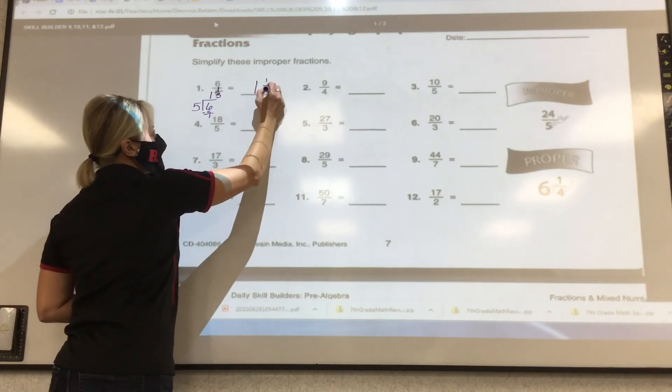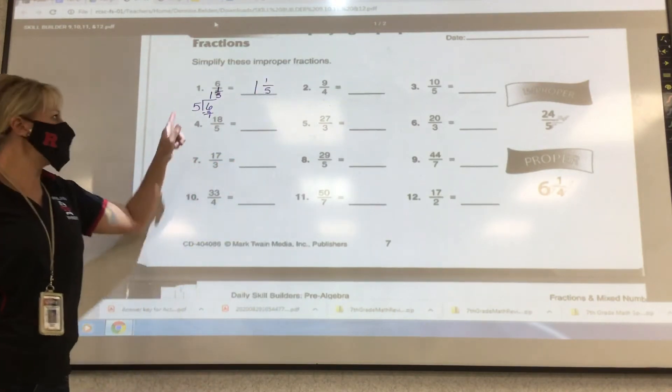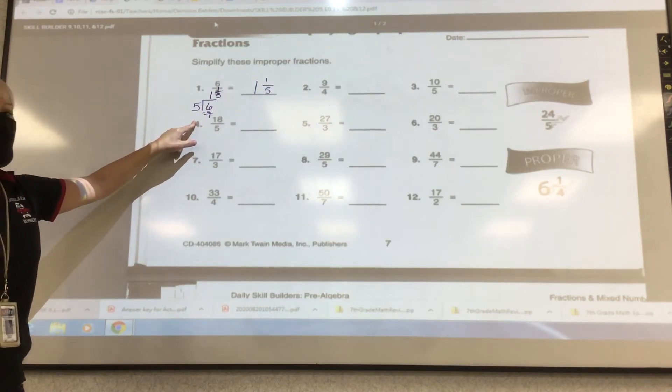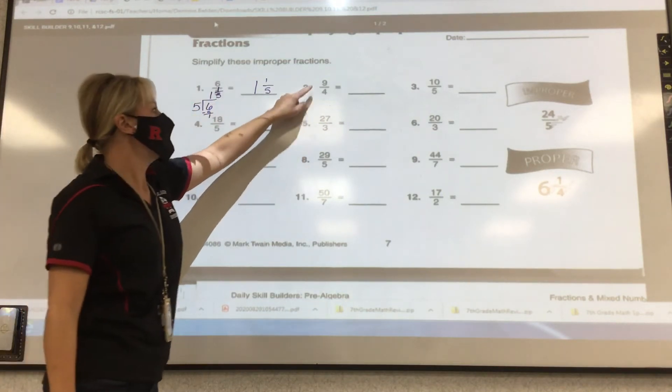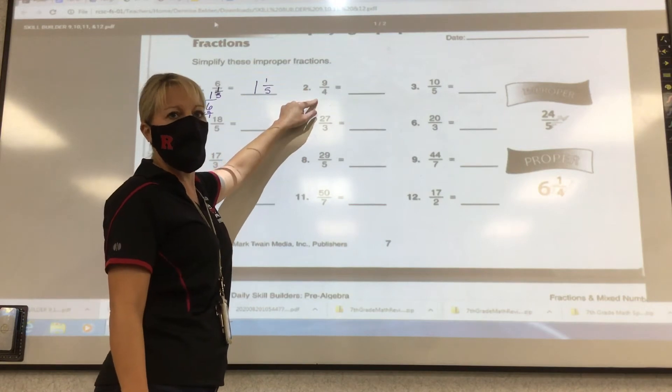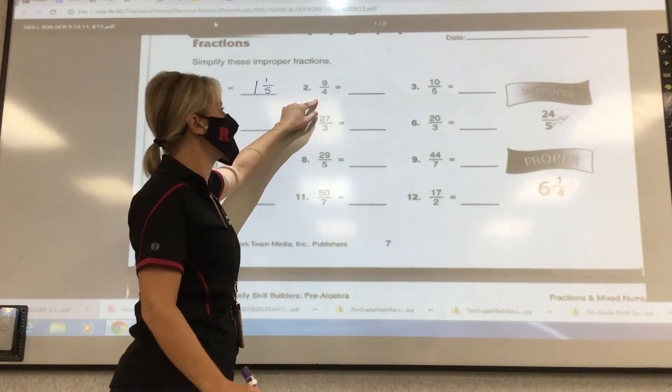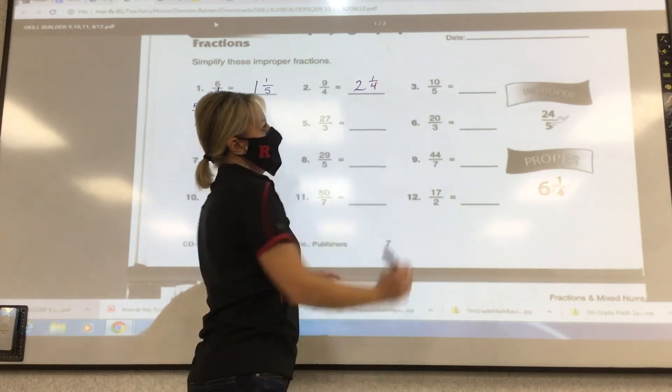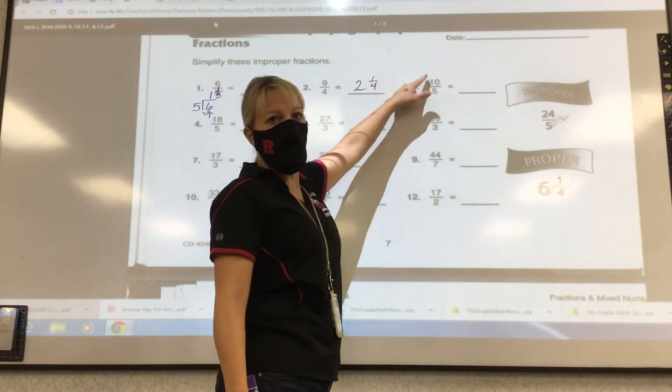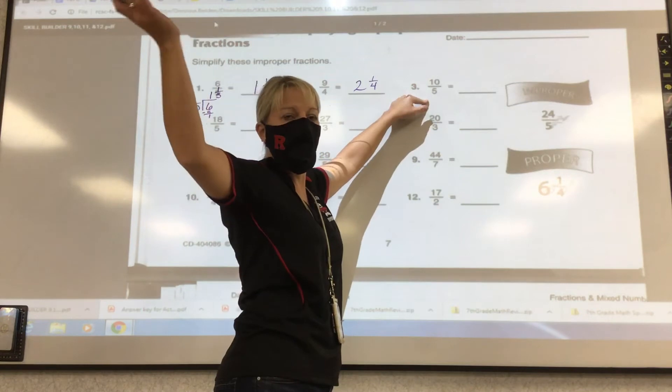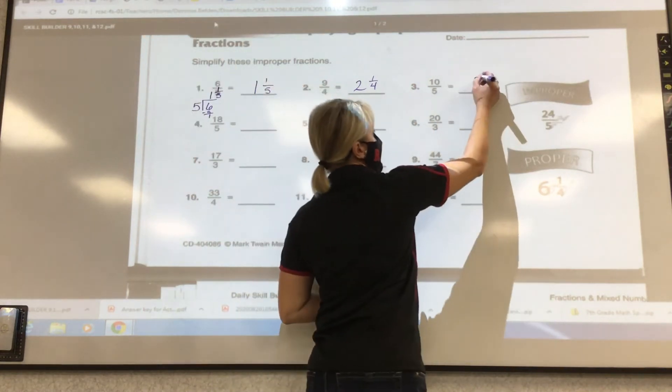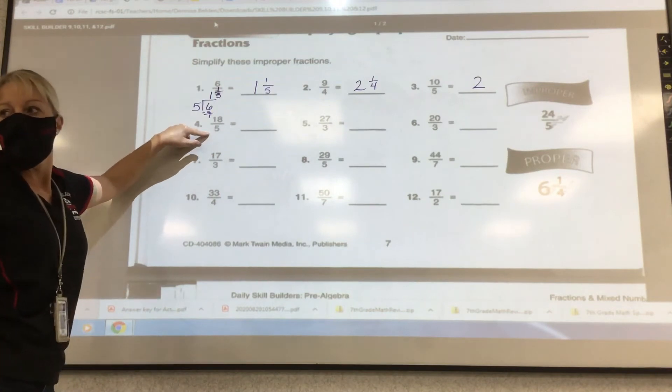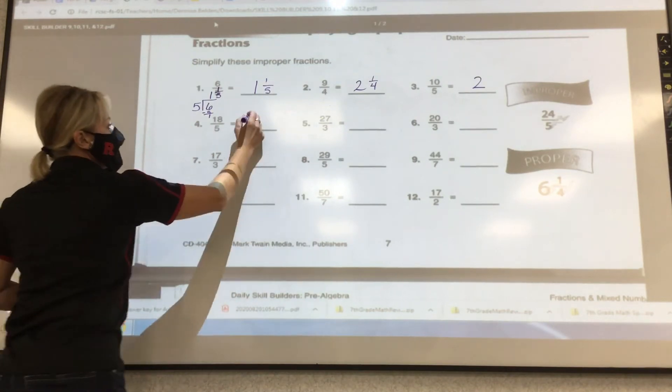If you can do it in your head, you do not need to show the work. If you can't do it in your head, go ahead and show the work. So 9/4 becomes what? Hunter? 2 and 1/4. 10/5, it's just like saying 10 divided by 5, which is? 2. Excellent.